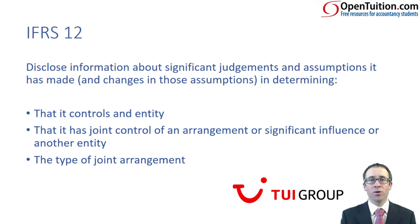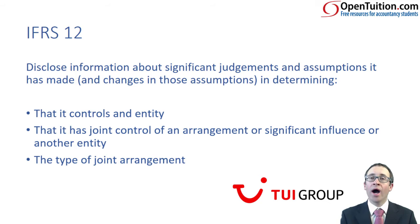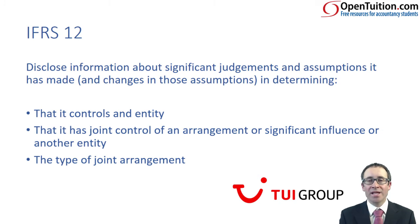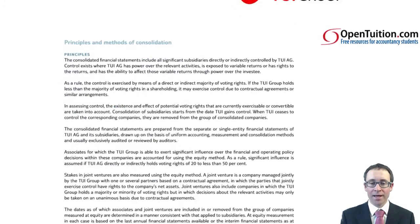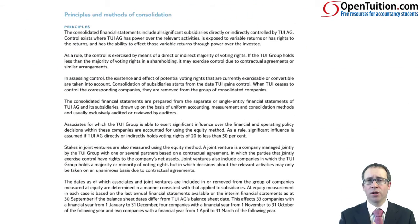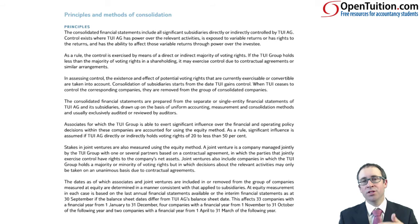We're going to look at a company called the TUI Group — a travel and leisure business. If you've been on holiday around Europe and booked a package holiday, you may have booked it with the TUI Group, or seen their planes at the airport with that smiley face on the tail fin. I've taken extracts and put them in the slide presentation. The first bit is one of the disclosure notes as part of IFRS 12 that tells you about why you've treated the subsidiary, associate, or joint venture as such.